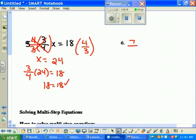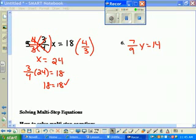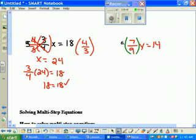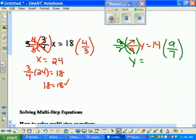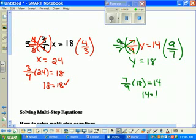So I want you to try the next one. 7 over 9 y equals 14. What do I have to do here? I have to flip it. So I'm multiplying both sides by 9 over 7, and I get y equals 18. I'm going to check it. All you have to do is 7 ninths times 18 in your calculator, and you should get 14.